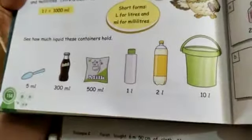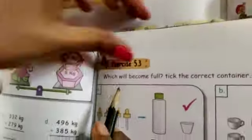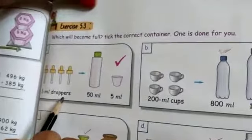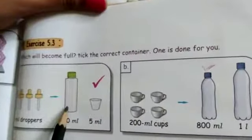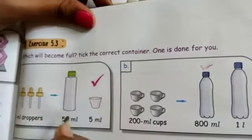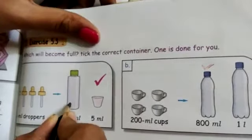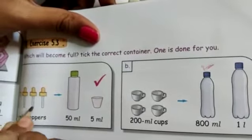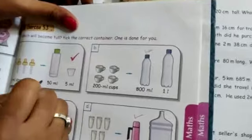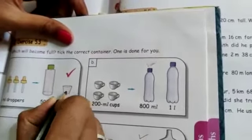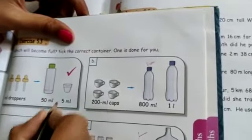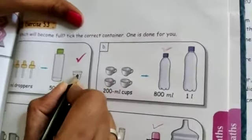Yes, see one question is there. Here which will become full? Here they have given some drops, some mls. See, in 50 ml bottle if I put 1 ml drops, 1, 2, 3, 4, 4 ml it will become this much. Here 5 ml cup is there. If I put this 4 ml drops means it will become till here, so this is the correct one. It will be near full.